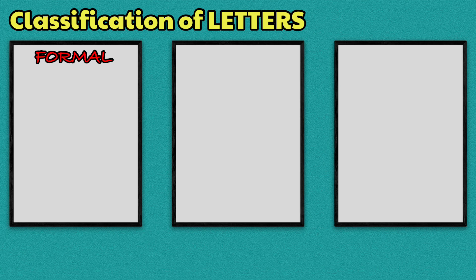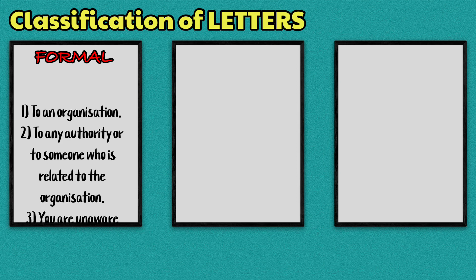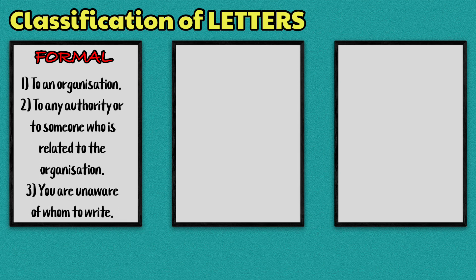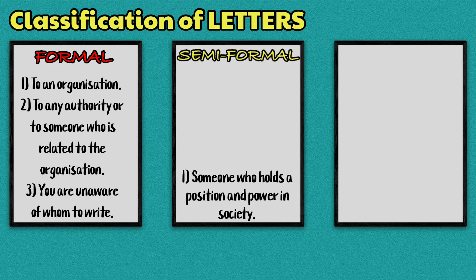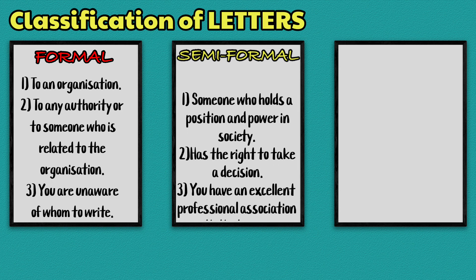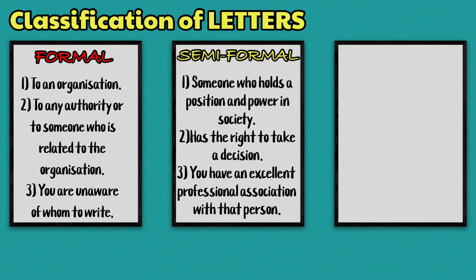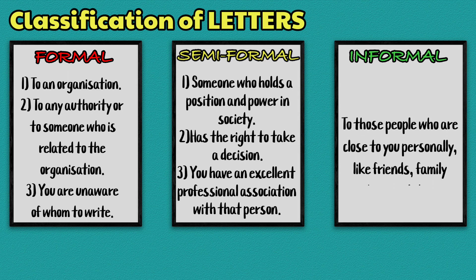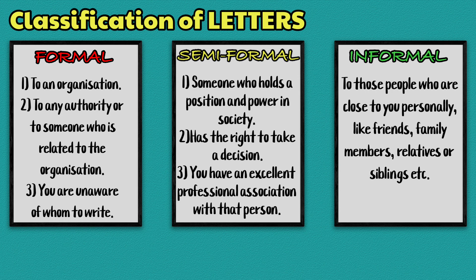The letters can be segregated into three following styles: 1. Formal — this letter should be written to an organization, any authority, or to someone who is related to the organization and you are unaware of whom to write. 2. Semi-Formal — this letter should be written to someone who holds a position and power in society, has a right to take a decision, and you have an excellent professional association with that person. 3. Informal — this letter is to be written to those people who are close to you personally, like friends, family members, relatives or siblings.